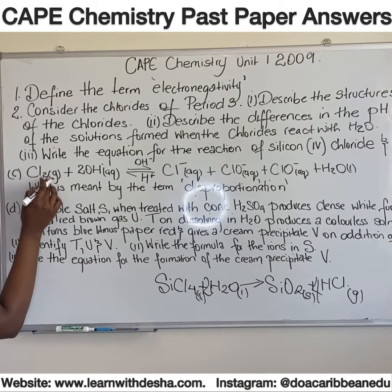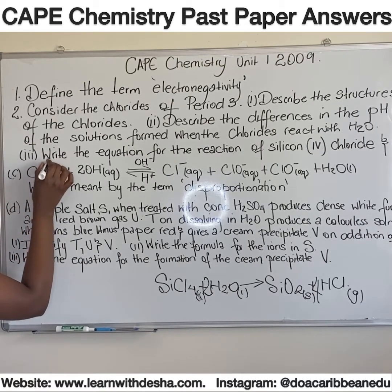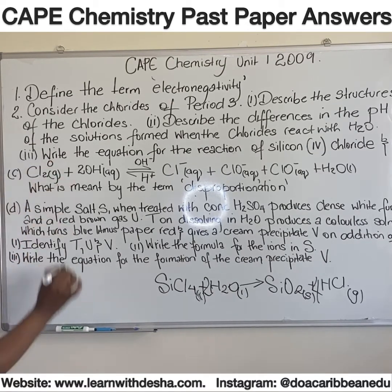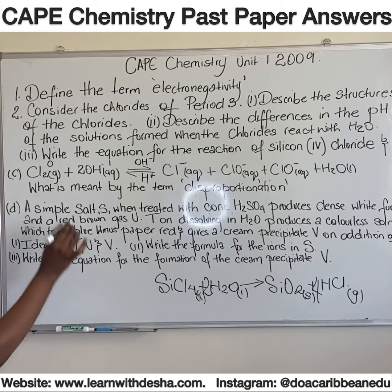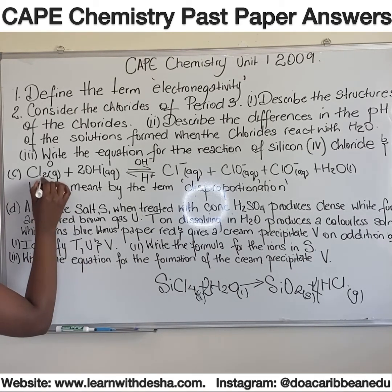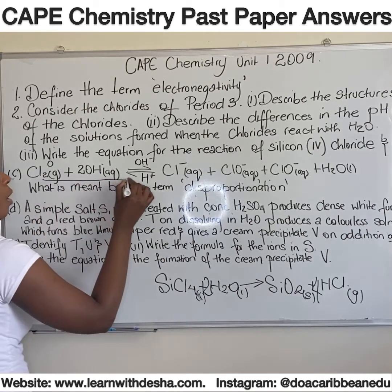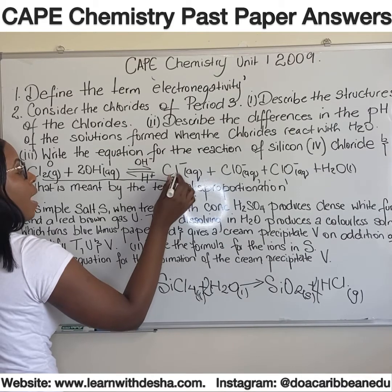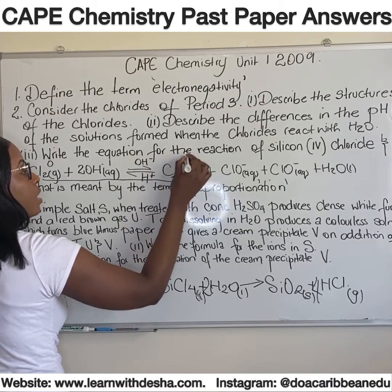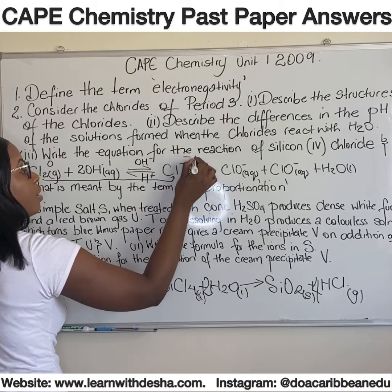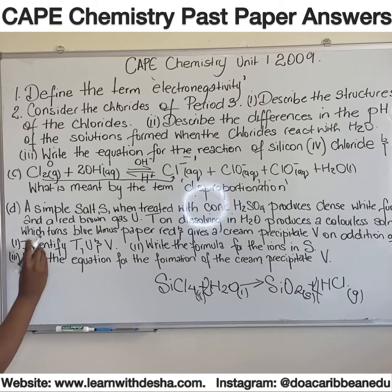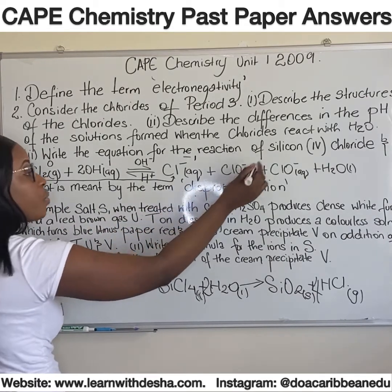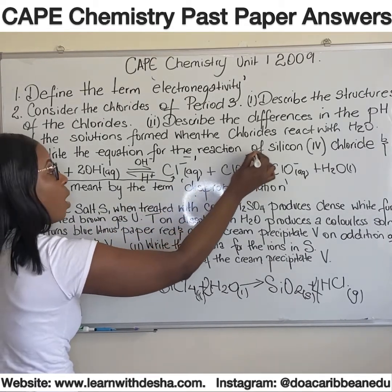Cl2 gas has an oxidation number of zero. It is being reduced all the way to the chloride ion at minus one, and it is also being oxidized to the chlorate ion, which is plus one.